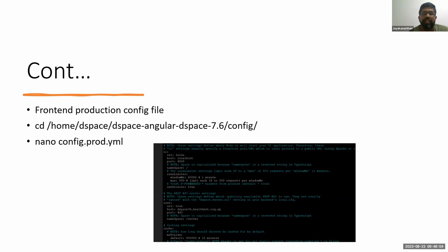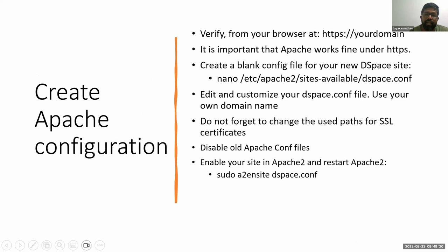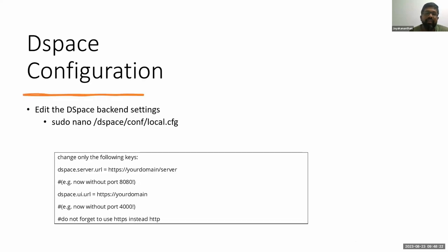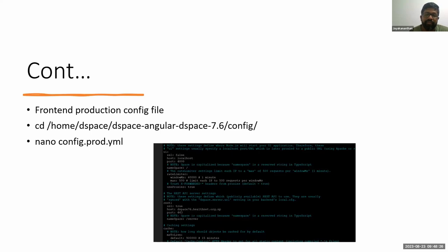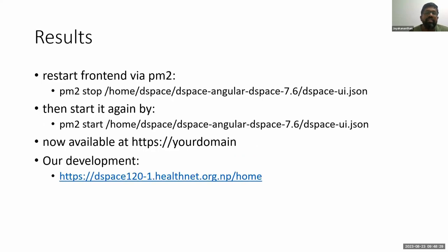In the Angular folder, there is a configuration file — config.example.yml. You need to enable the backend REST settings: set ssl to true, and set the domain name and port. So you have to do two configurations after installing and configuring Apache: one in the DSpace config file and one in the Angular config file. After that, stop and restart the frontend, and your SSL is ready.